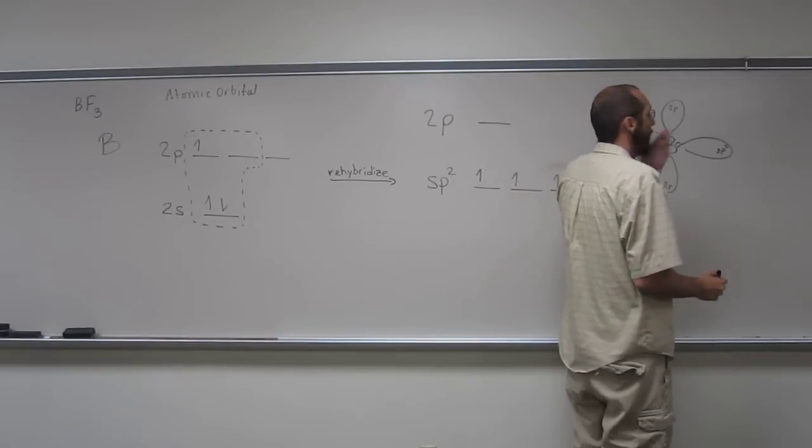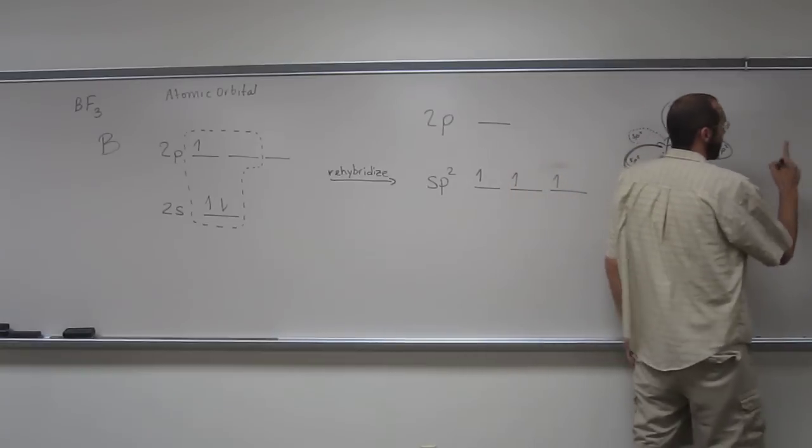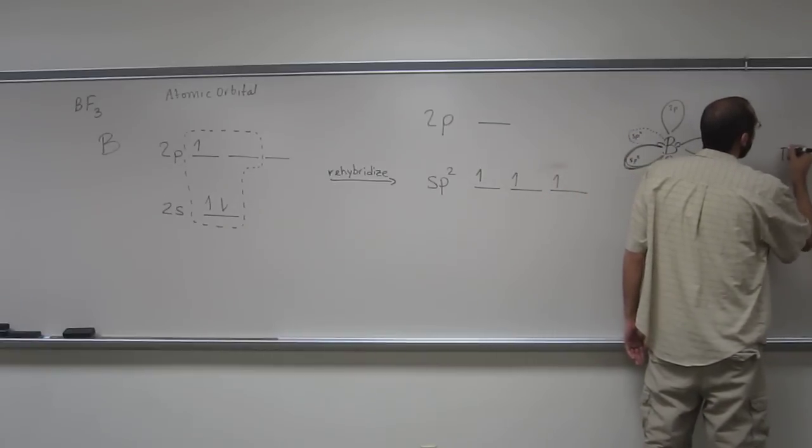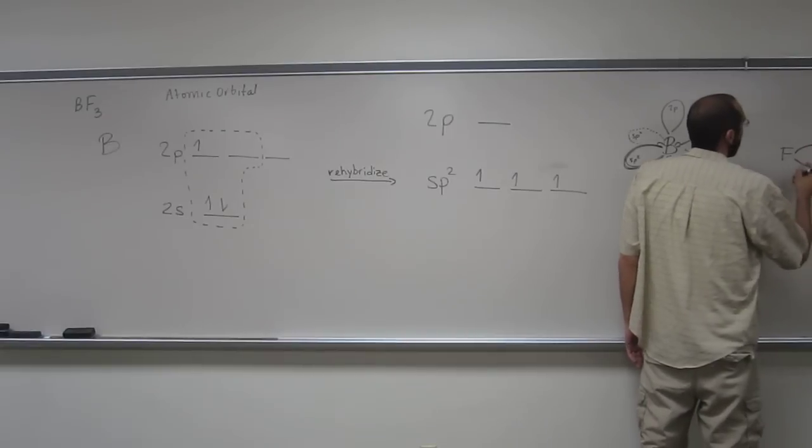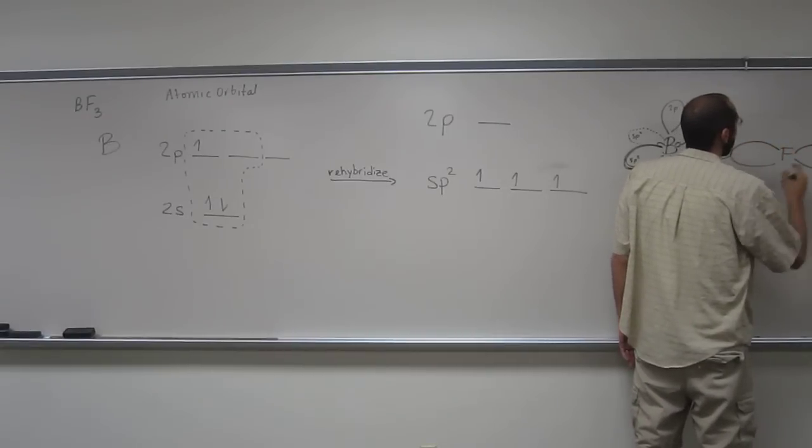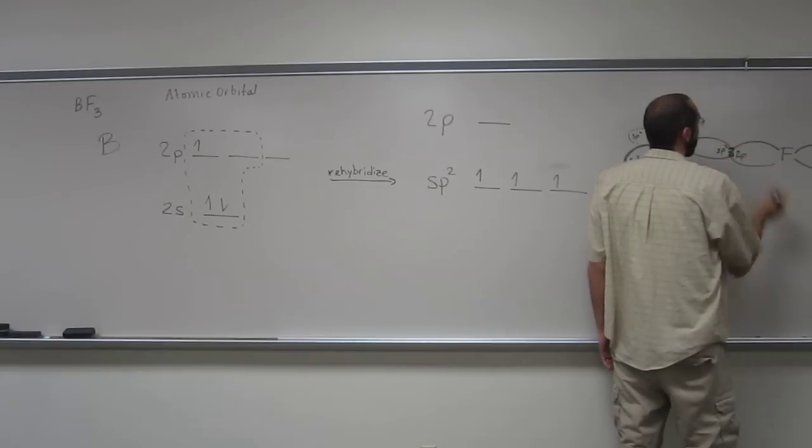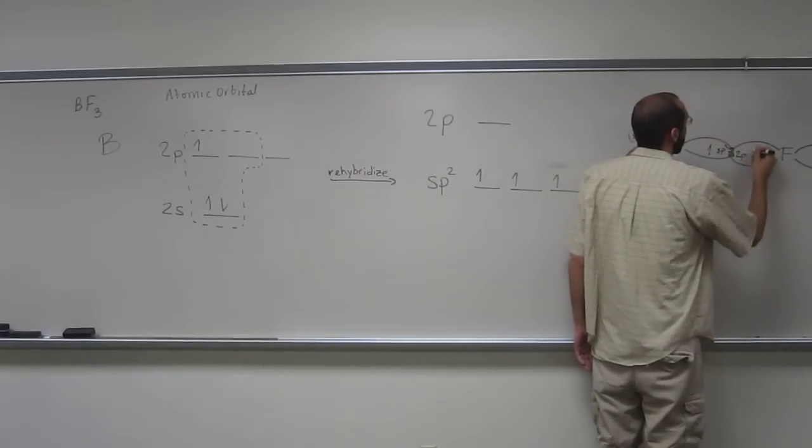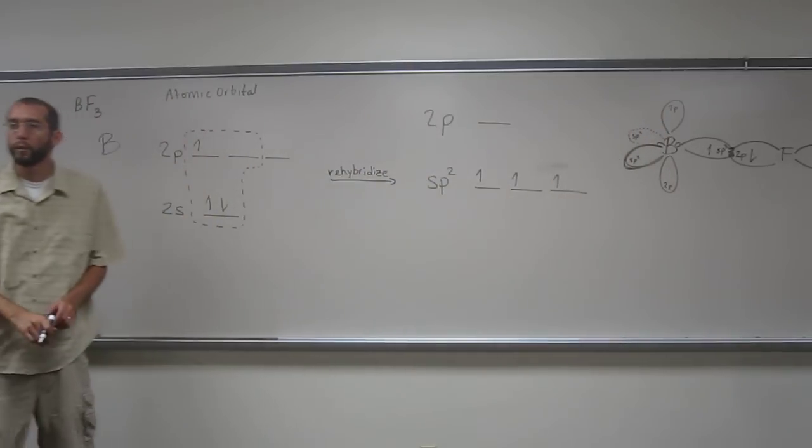But anyways, the last thing we want to talk about is how the fluorine bonds to it. We'll just pick one of them, because it'll get way too messy here. The fluorine, it didn't need to rehybridize. That's a big lobe and that's a big lobe. So imagine those two lobes being the same size. And this being the 2P orbital. And that overlap right there, that's your covalent bond. So we've got the 1 there and the 1 there.